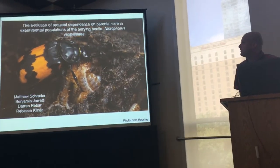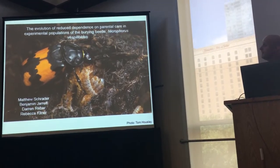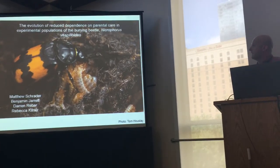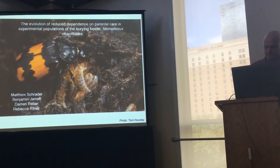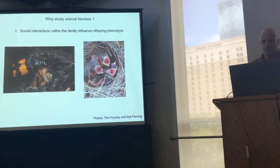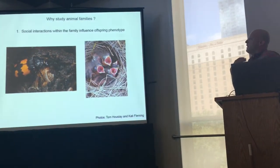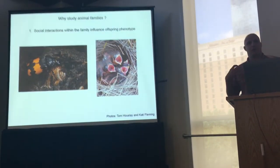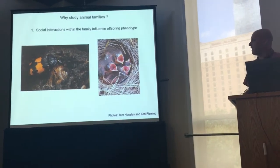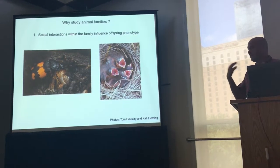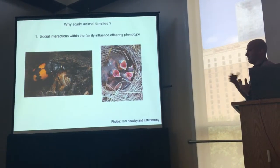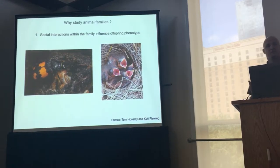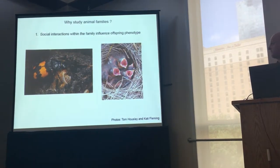I'm Matt Schiller, and I'm going to be talking about the evolution of reduced dependence on parental care in experimental populations. In animal families, the social interactions that occur as offspring are developing create the environmental context in which those individuals develop, and this can have important consequences for offspring phenotype.